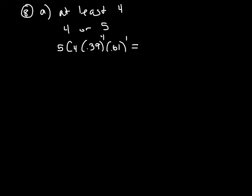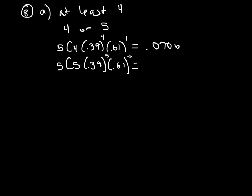We also have to do this for exactly five. Instead of 5C4, we do 5C5. The numbers in the parentheses will be exactly the same — the only thing that changes is our exponents. Since this is a five, our first exponent will be a five, and since five minus five is zero, the second exponent will be zero. You can plug these in your calculator individually, and the final answer must be rounded to the nearest hundredth. When you add these together, you get 0.0796, so to the nearest hundredth it would be 0.08.